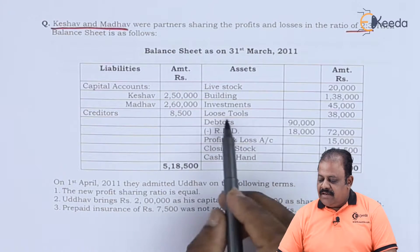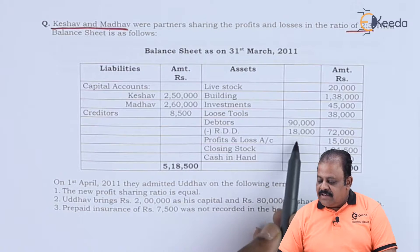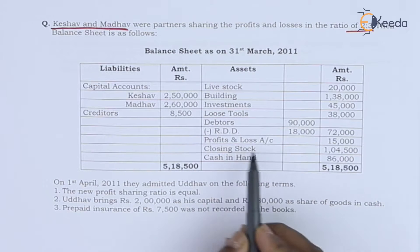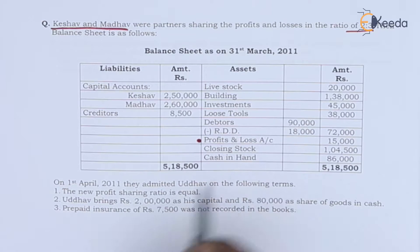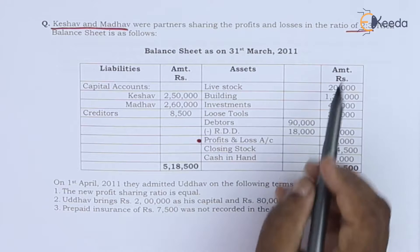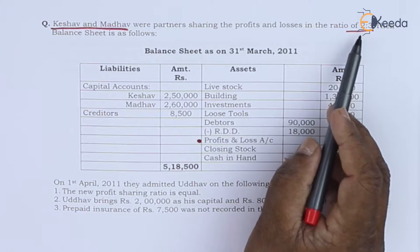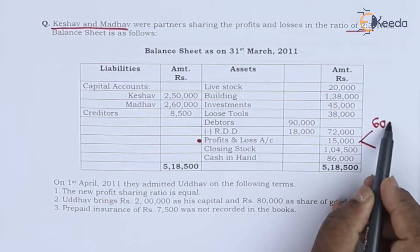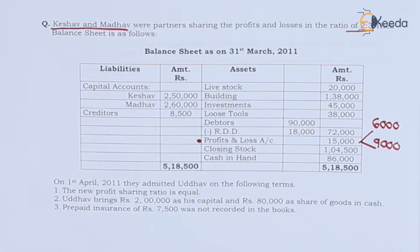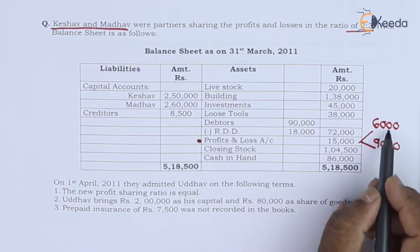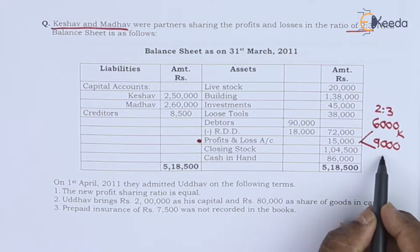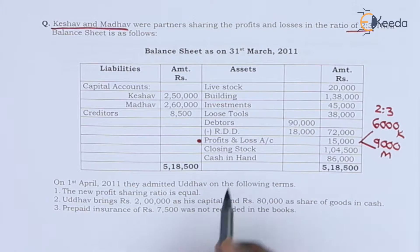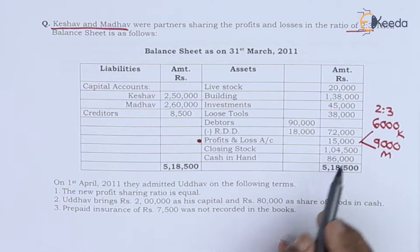The balance sheet includes livestock, building, investments, loose tools, debtors less RDD, and a profit and loss account which represents accumulated loss. This accumulated loss will be divided between the old partners in their old ratio of 2:3 — Keshav gets 6,000 and Madhav gets 9,000. Closing stock is 1 lakh 4,500, and cash in hand is 86,000.